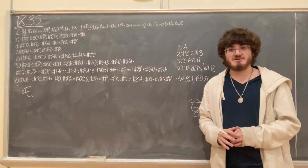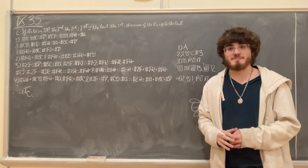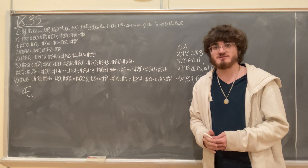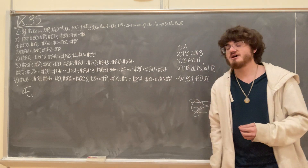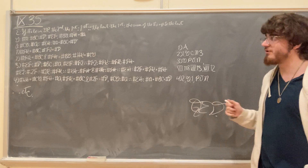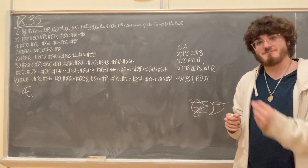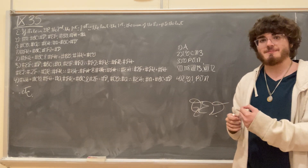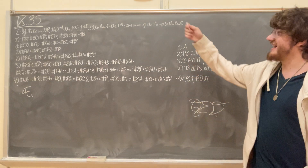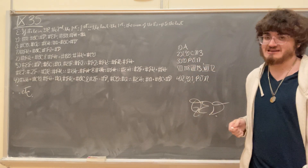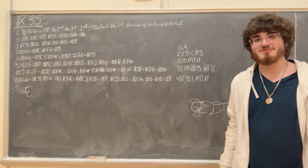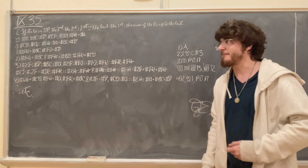Hello! This will be a demonstration of Proposition 35 from Book 9 of Euclid's Elements, which says that if numbers be in a continued proportion, then the second number minus the first number is to that first number, just as the last number minus that first number is to the sum of all those numbers up to the last number.